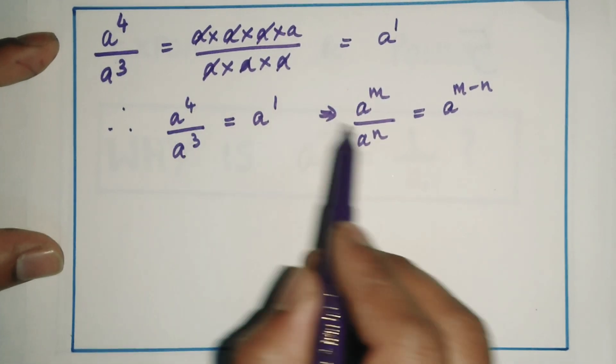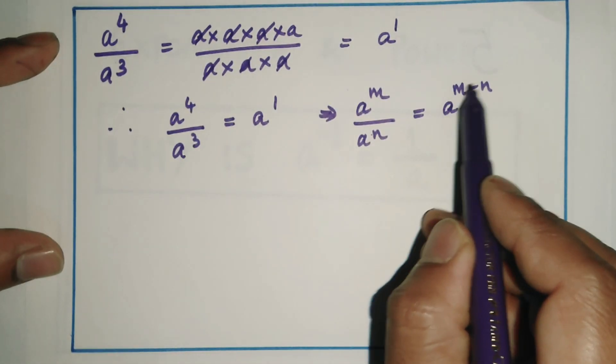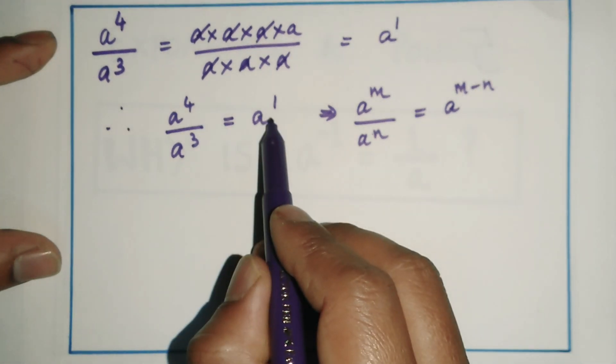So here, m is 4, n is 3, and a^(m-n) is 4 minus 3, which gives a^1.